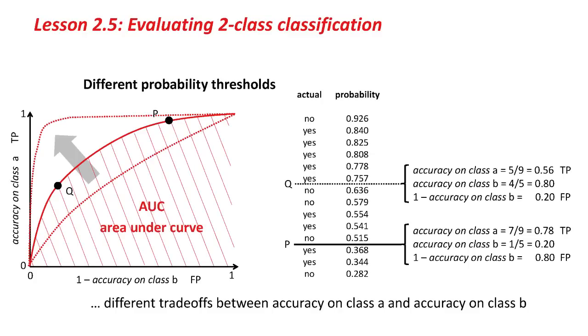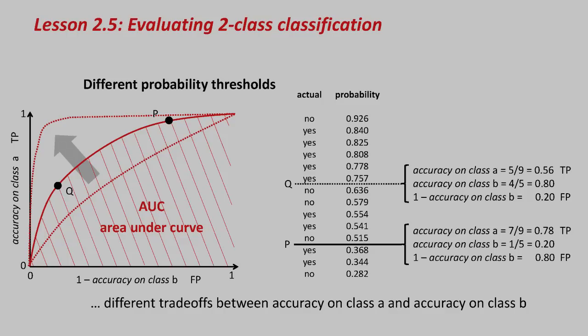One way of evaluating the overall merit of a particular classifier, say the Naive Bayes one joining the PQ line, is to look at the area under the curve. That's the area shown there. If that area is large, then we're going to get a better classifier evaluated across all of the different possible trade-offs, the different thresholds.